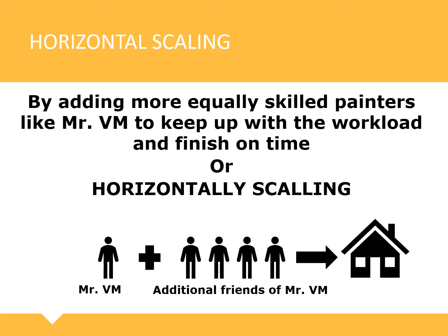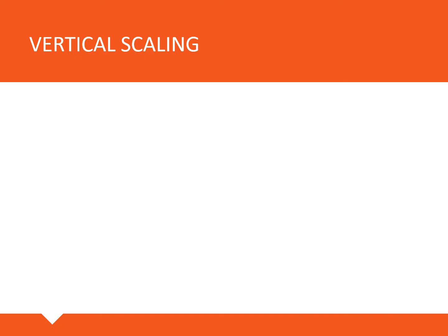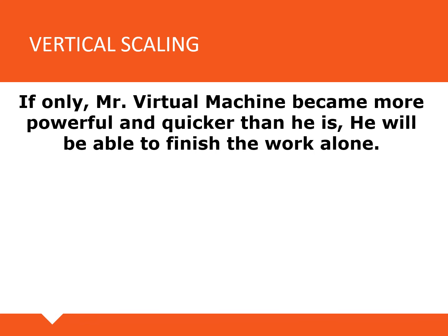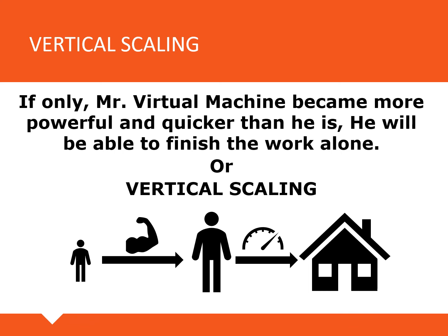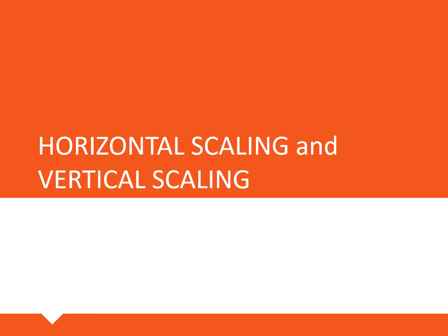Now let's talk about vertical scaling. What if by a miracle Mr. VM, or Mr. Virtual Machine, became more powerful and quicker than he is? He will be able to finish the workload on time on his own. In the representation here, if Mr. VM becomes bigger and quicker, he'll have more power and speed to finish the work on time. This kind of strategy is called vertical scaling.